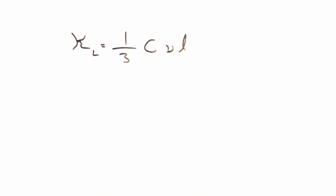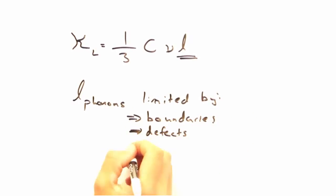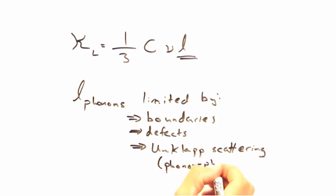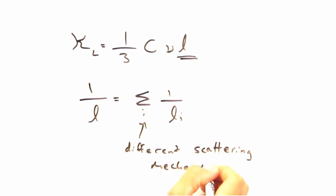So that leaves us with the mean free path. Last time, we explored several sources of scattering, including boundaries, defects, and Umklapp scattering. Each scattering source has an associated mean free path, and we get the net mean free path through the sum over one over each of these mean free paths L. Of these scattering sources, Nicole, which do you think contributes the most?